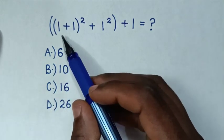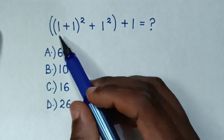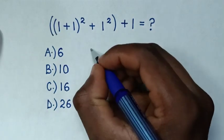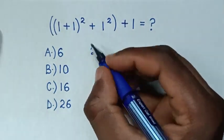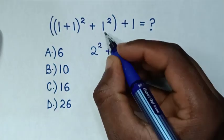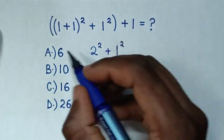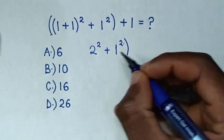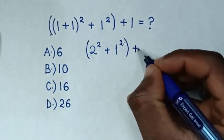So we start by dealing with the operation inside the inner bracket. 1 plus 1 is 2, so it will be 2 squared, then plus 1 squared in brackets, plus 1.